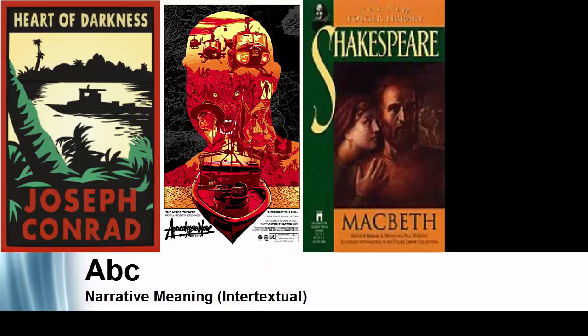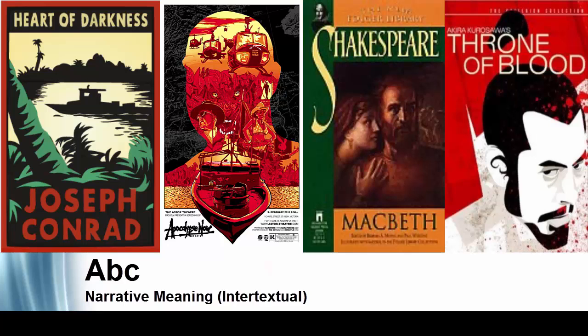Another example would be Shakespeare's Macbeth and Kurosawa's Throne of Blood. Macbeth is a play written by Shakespeare in the early 1600s, telling a story of an individual who rises into power, becomes king, and is eventually destroyed because of a tragic flaw. Kurosawa uses that similar story in Throne of Blood, but sets it in feudal Japan. Both are tragedies involving a tragic hero and a tragic flaw.